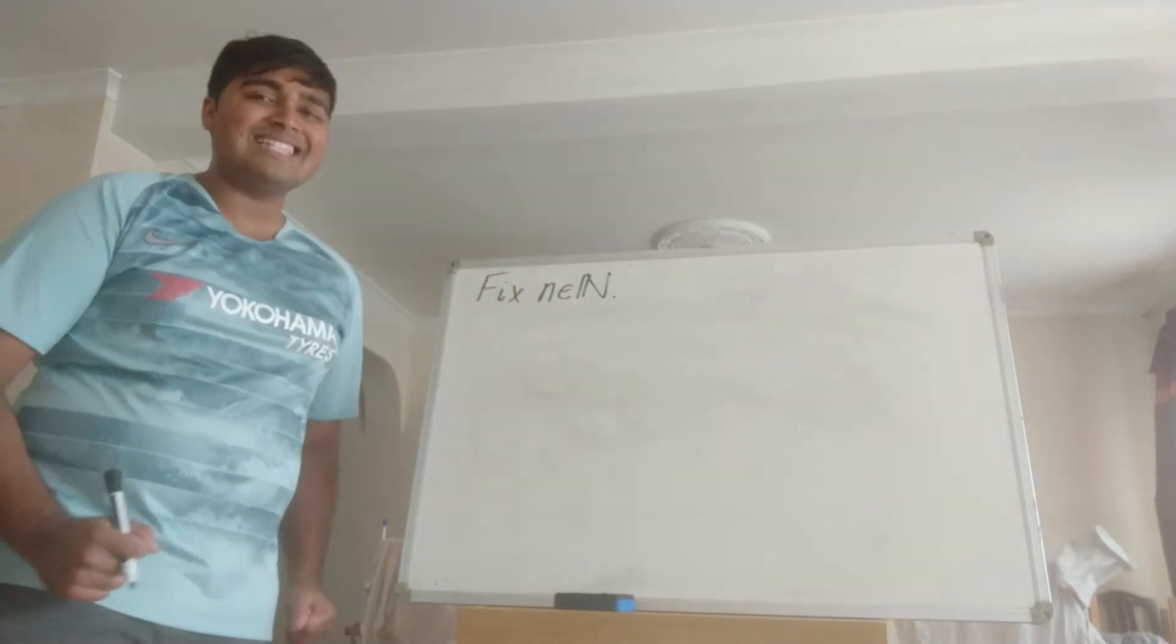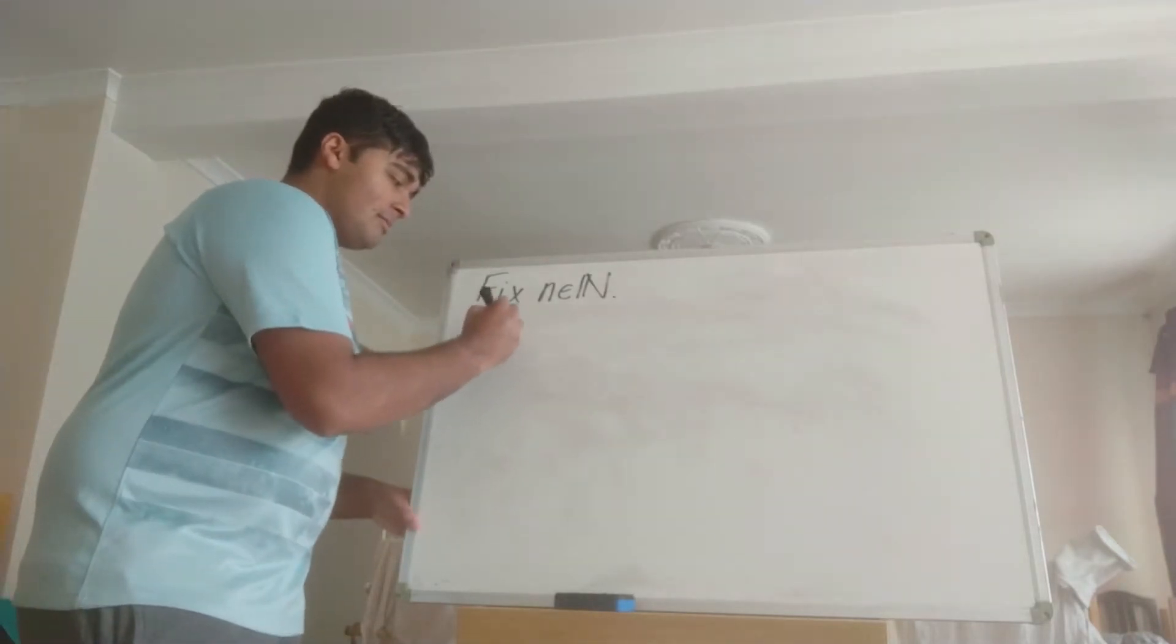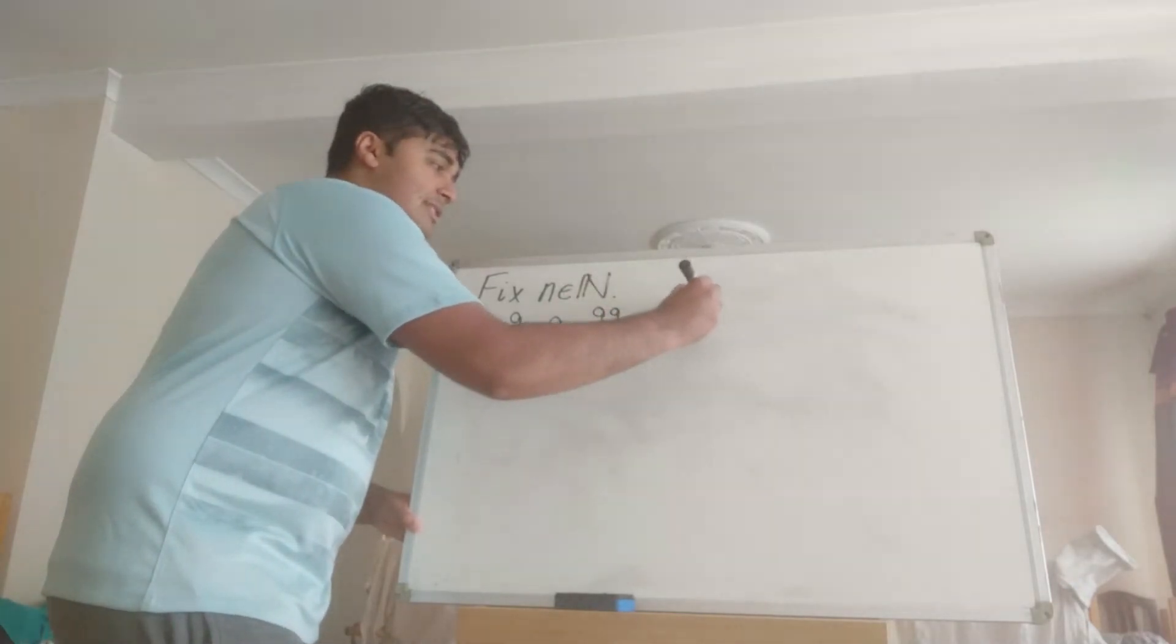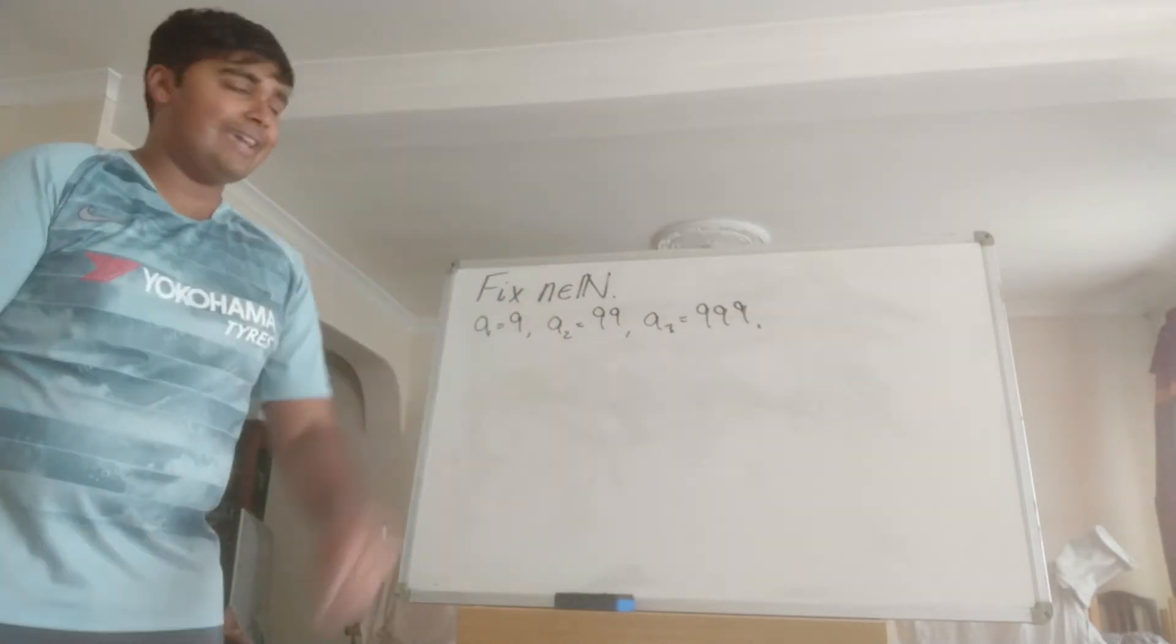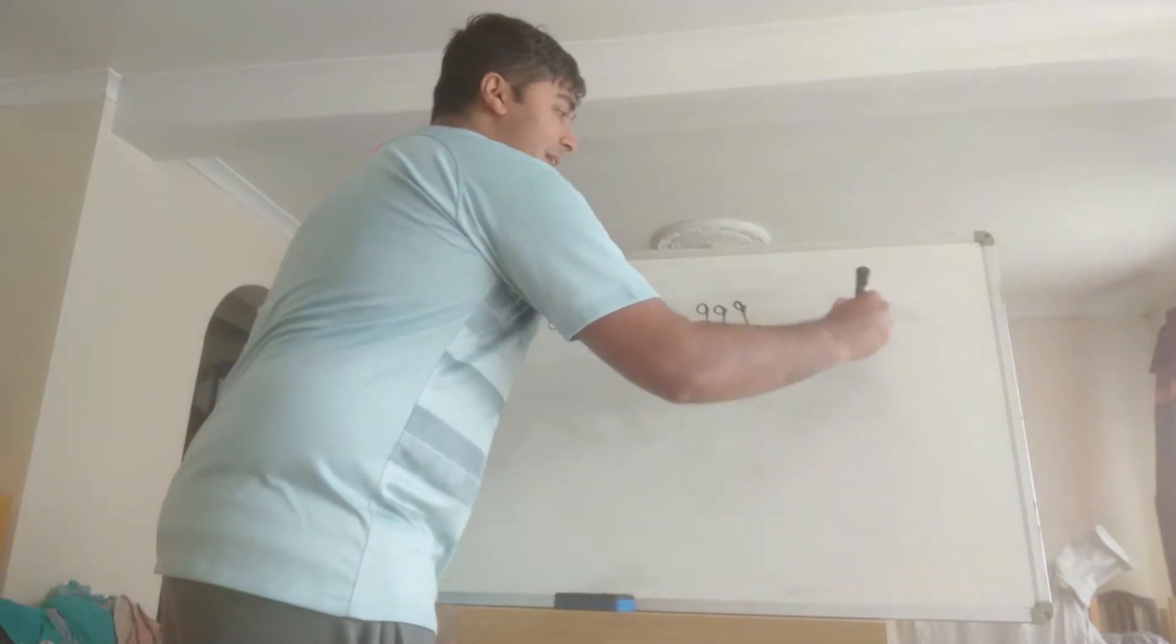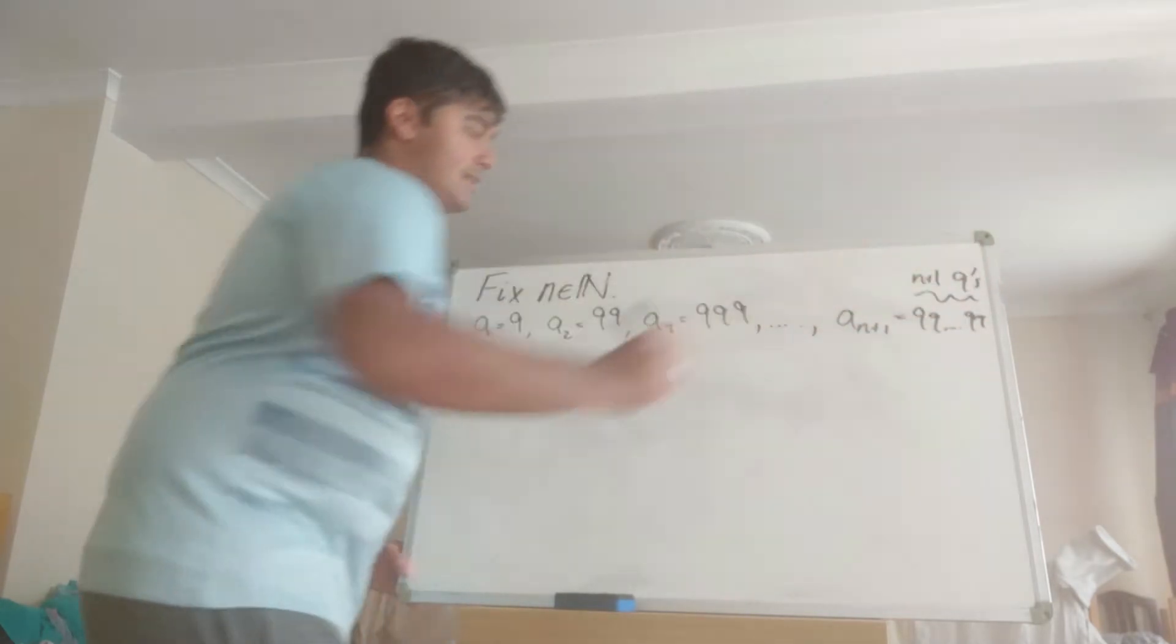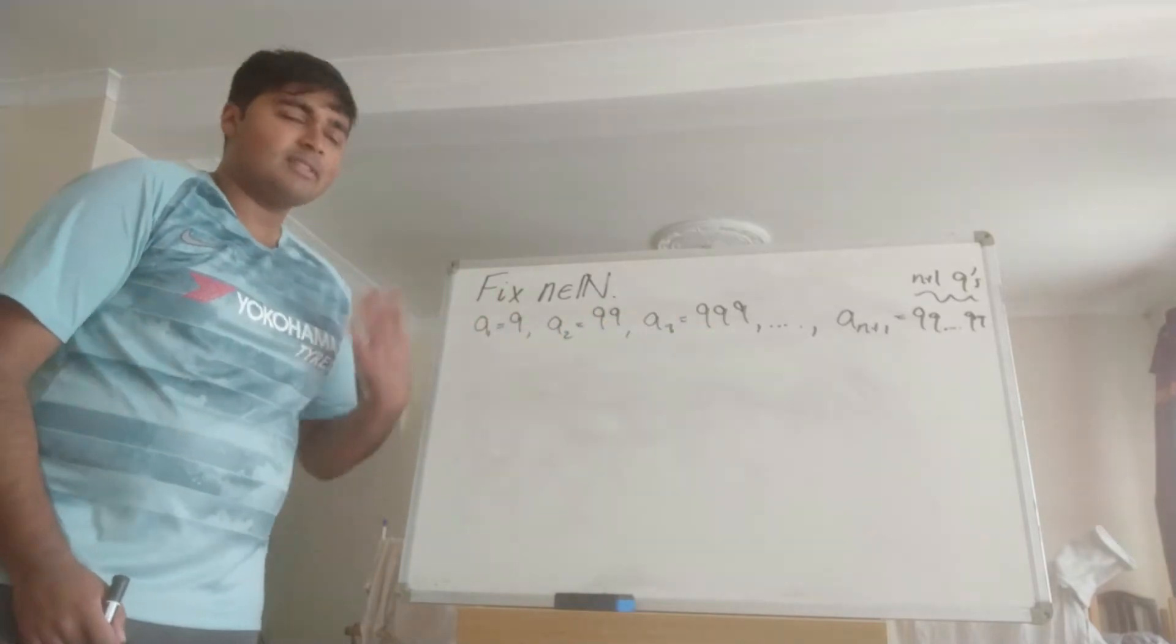So firstly I'm going to write down a sequence of n plus 1 numbers. I'm going to start with a1 being equal to 9, a2 being equal to 99, a3 being equal to 999, and you can see the pattern. So ak is just going to be k nines. So I'm going to continue this all the way up to an+1, which will obviously be a bunch of nines, so that there are n plus 1 nines. So there are n plus 1 terms in this sequence.